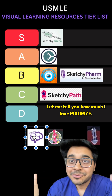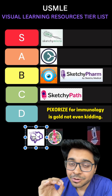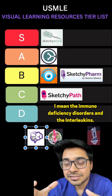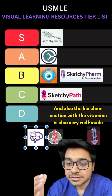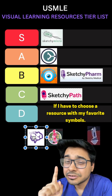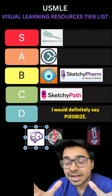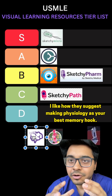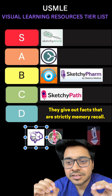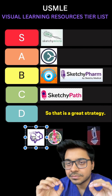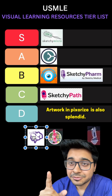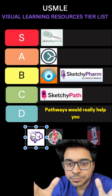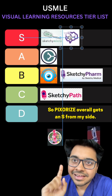Pixerize — let me tell you how much I love Pixerize. Pixerize for immunology is gold — the immunodeficiency disorders and the interleukins are just so well-made. The biochem section with the vitamins is also very well-made. If I had to choose a resource with my favorite symbols, I would definitely say Pixerize, and it's not overwhelming. I like how they suggest making physiology your best memory hook — it gives out facts that are strictly memory recall. The artwork is splendid; the vitamin deficiencies, biochemistry cycle, and heme synthesis pathway from Pixerize would really help you. Pixerize overall gets an S from my side.